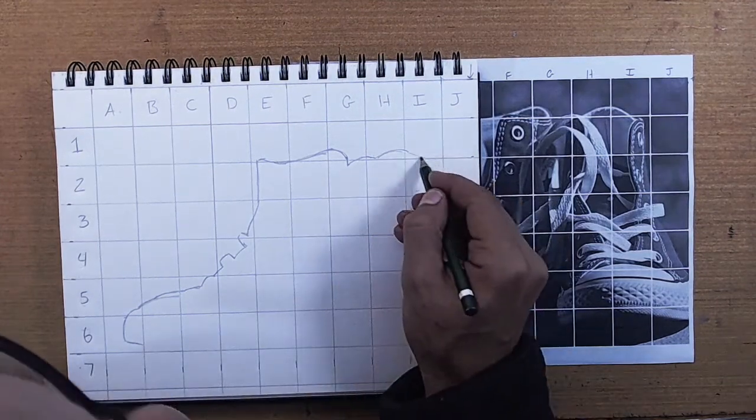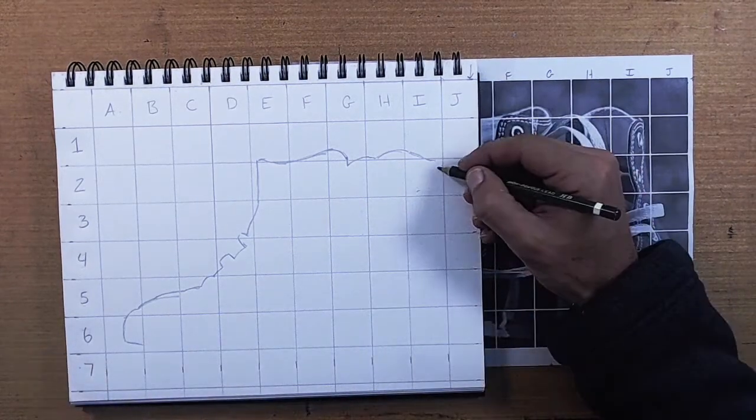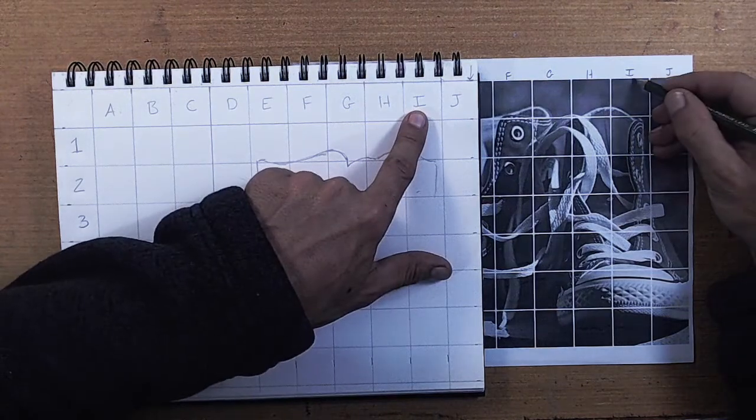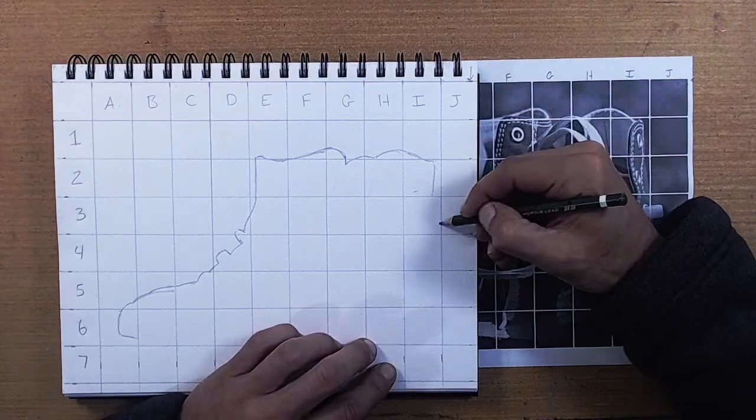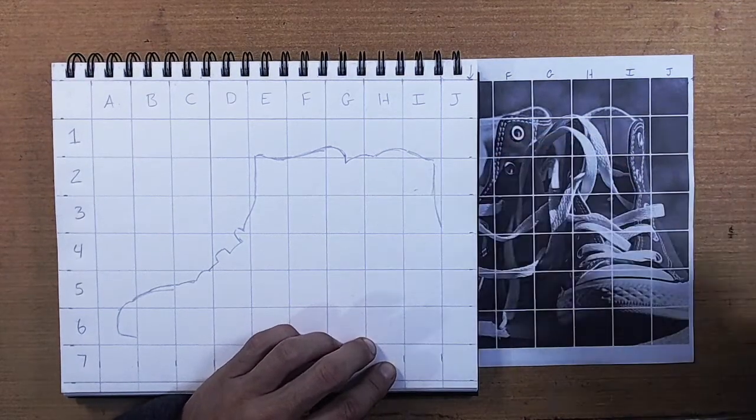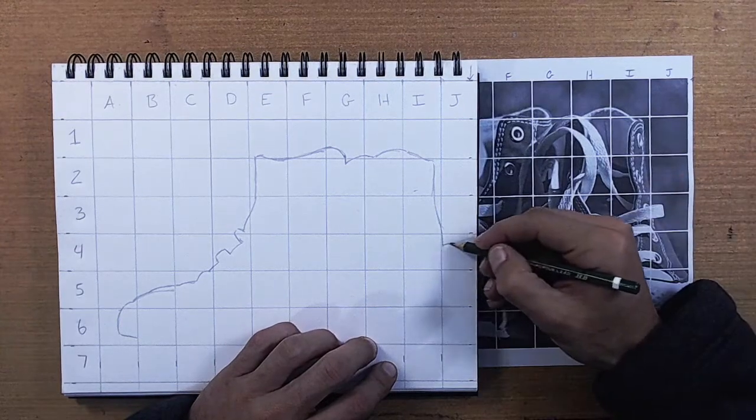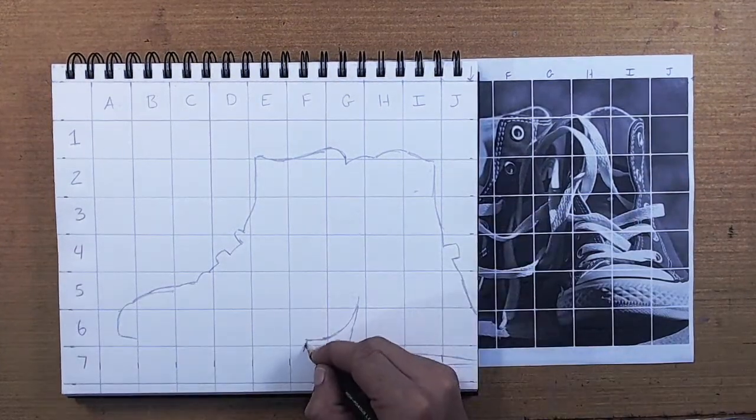Ideally, drawing with a grid solves these proportion problems. The grid helps us to get the contours of our subject and the details of our subject to land very close to where they belong. Even if we're not drawing in exactly the right place inside of a block, as long as the part of the shoe that we're drawing is in the correct block, it's going to be very close to perfect.